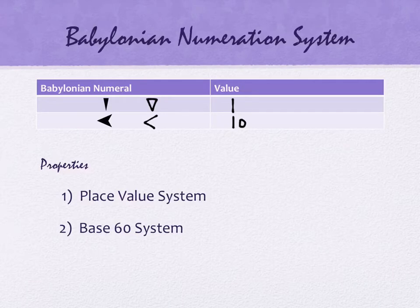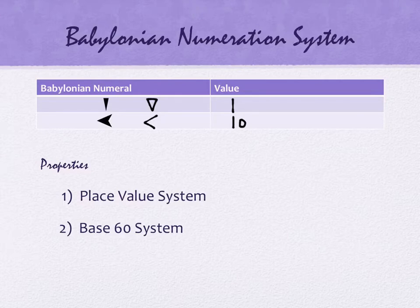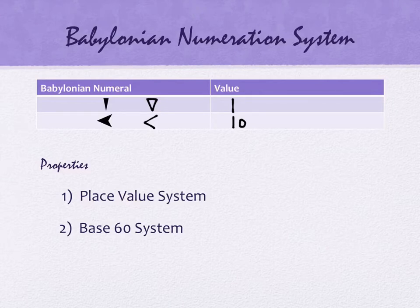With just those two symbols, writing a large number like 23,145 would seem to require a lot of symbols. The way they get around that is with a place value system. Our place value system is base 10 — every place is a power of 10. The ones place is 10 to the zero, tens is 10 to the one, hundreds is 10 squared.